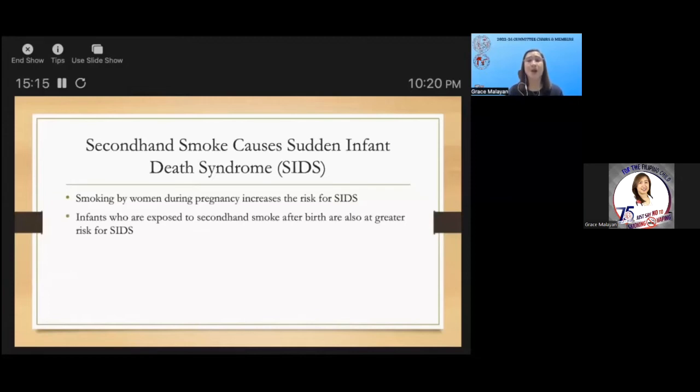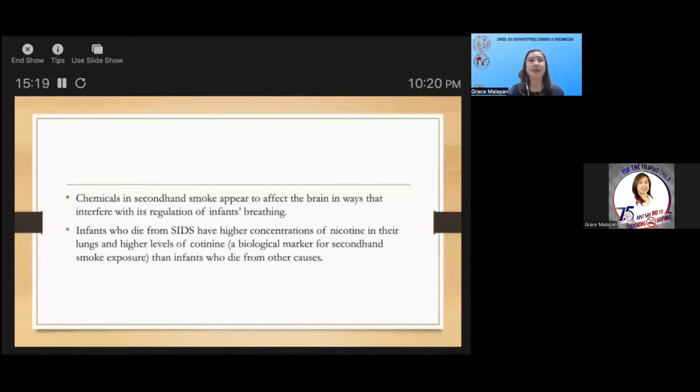Smoking by women during pregnancy increases the risk of SIDS, and infants exposed to second-hand smoke after birth are also at greater risk for SIDS. Chemicals in second-hand smoke appear to affect the brain in ways that interfere with its regulation of infant's breathing. It has been observed that infants who die from SIDS have higher concentrations of nicotine in their lungs and higher levels of cotinine than infants who die from other causes. By the way, cotinine is a biological marker for second-hand smoke exposure.